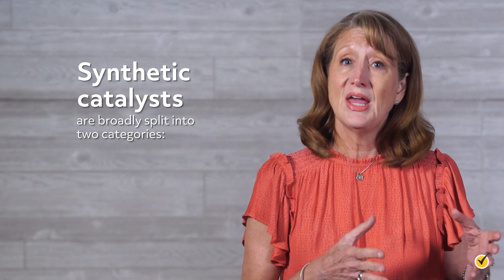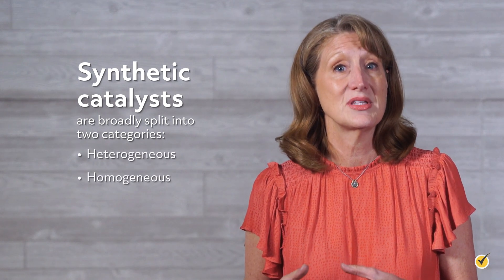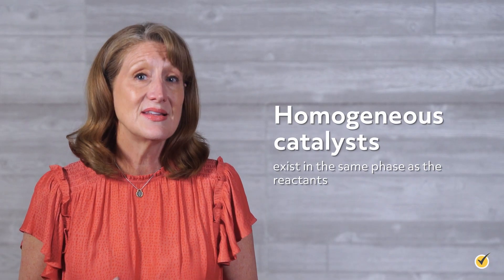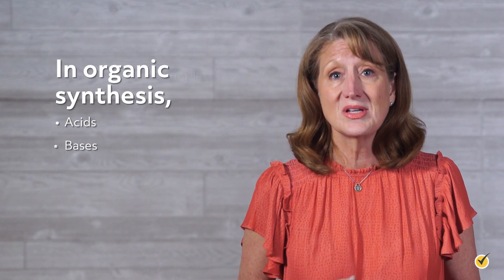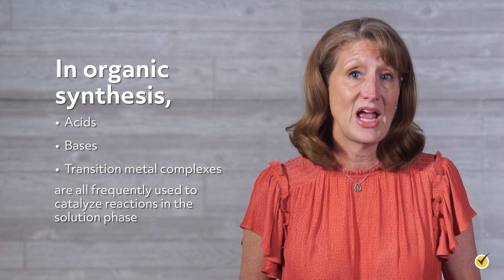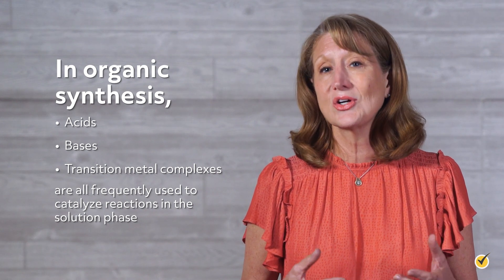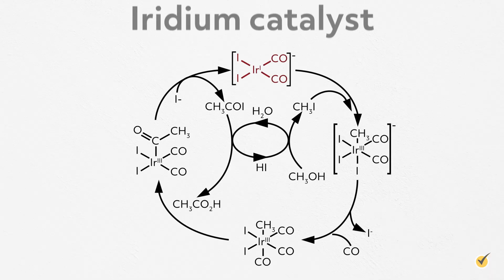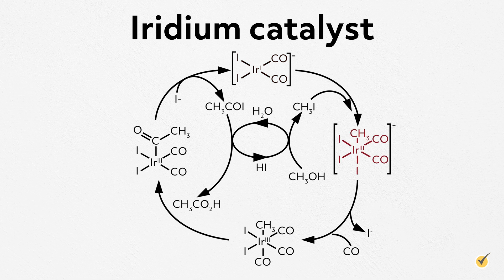Now that we've covered the theory of how catalysts operate, let's explore what they look like and when they're used. Synthetic catalysts are broadly split into two categories: heterogeneous and homogeneous — terms that refer to their phase. Homogeneous catalysts exist in the same phase as the reactants. In organic synthesis, acids, bases, and transition metal complexes are all frequently used to catalyze reactions in the solution phase. These are especially important in industrial processes. For example, an iridium catalyst is used in the large-scale production of acetic acid, where it remains in solution with the reactants and is regenerated after each cycle.